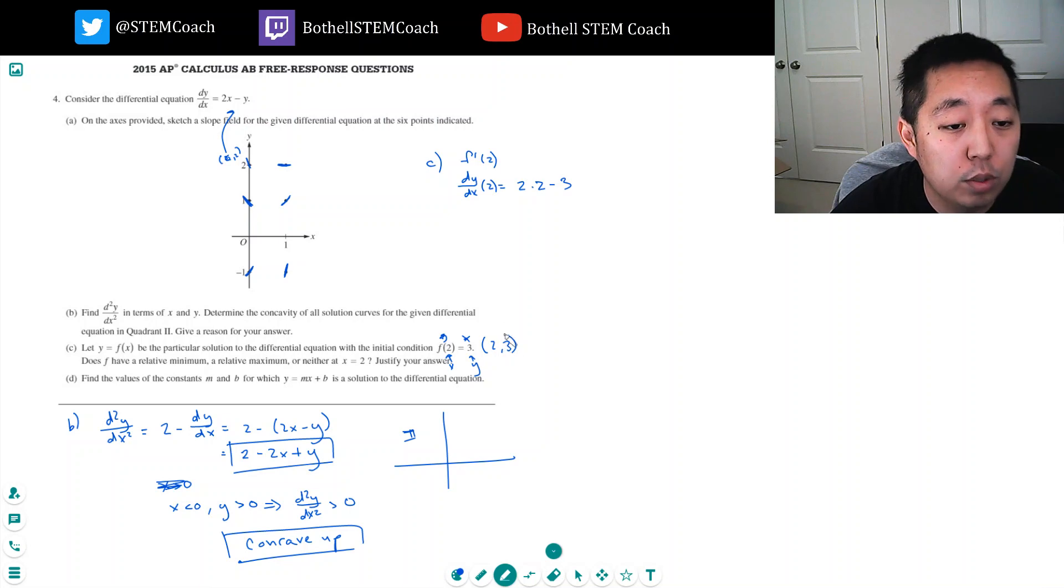Well, the derivative there at 2, 3 is 2 times 2 minus 3. That's equal to negative 1. Did I get that right? x is 2, y is 3. So, it's neither. Because x equals 2 is not a critical point. A critical point for a relative min or max is that the derivative has to be 0 there. The derivative is not 0 there at x equals 2, y equals 3.